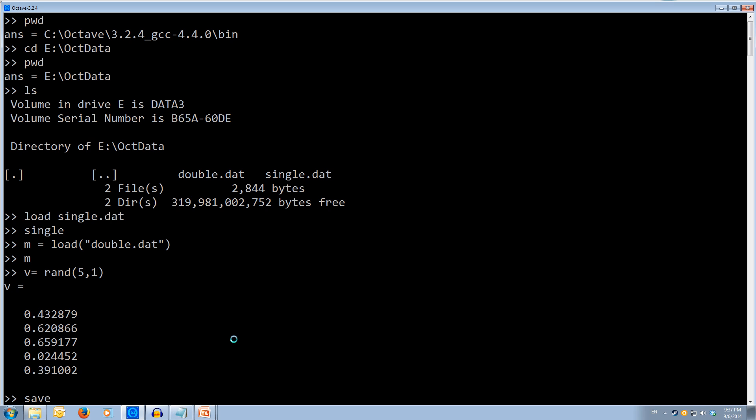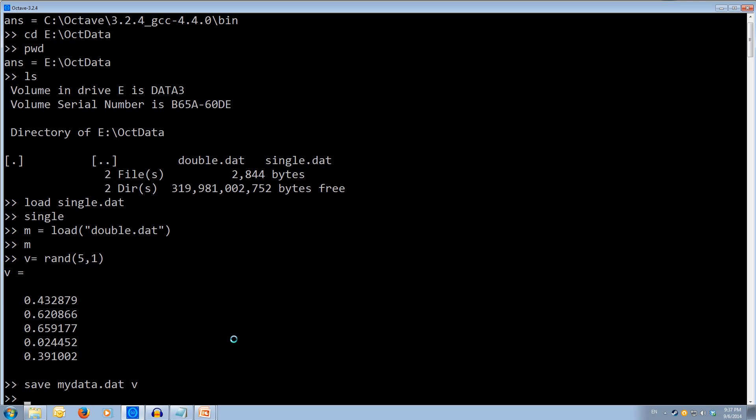So let's save it out to our own file. So we use the save function. So save and I want to call the file name my data. And we'll give it the extension dot dat. And then we want to save out the variable v. And that will save it out.